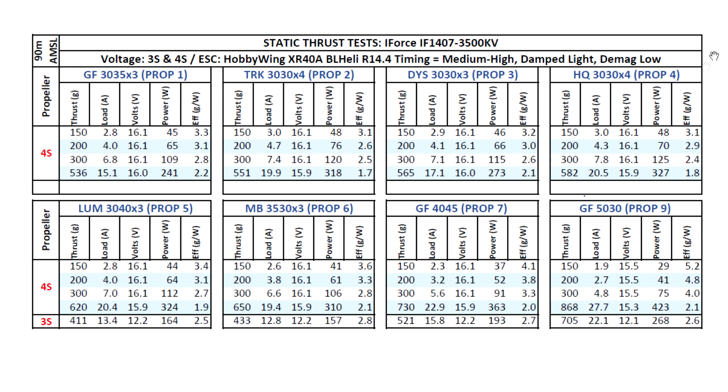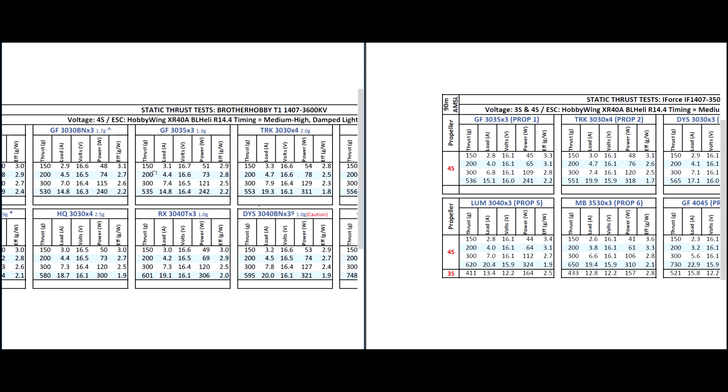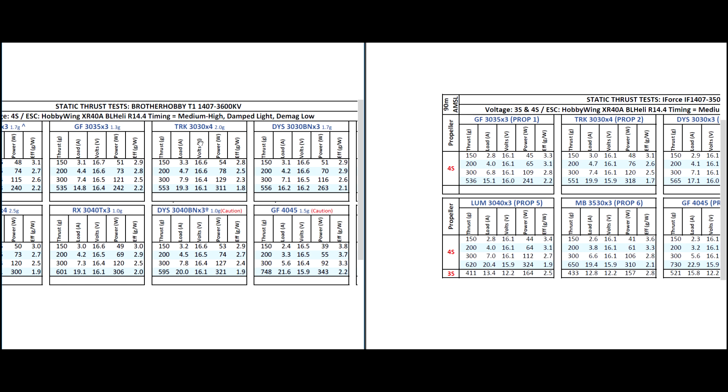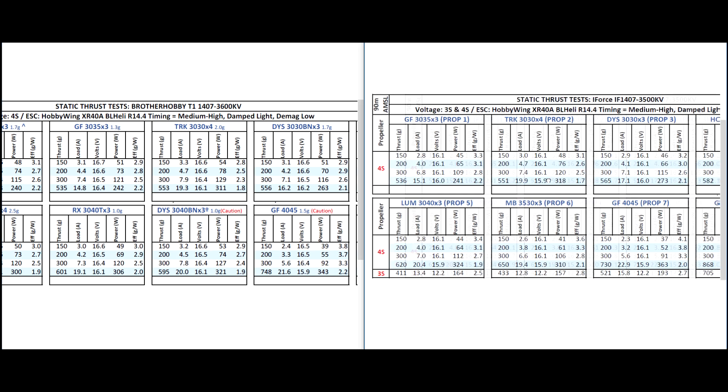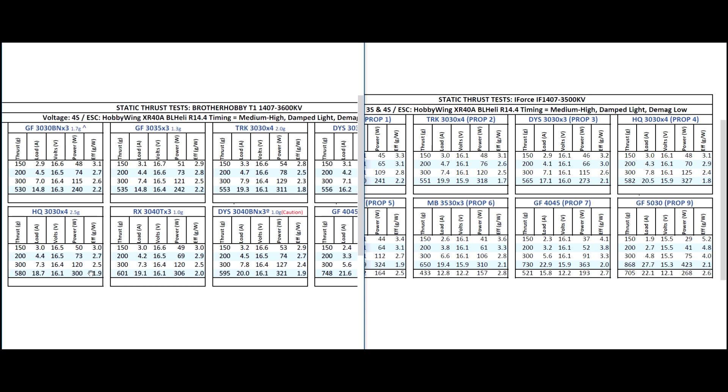Alright, so let's compare it to the Brother Hobby. So let's look at a couple of the props that would make a good comparison. Team Racecraft 3030x4, pretty close, 551 versus 553, 19.9 versus 19.3, so this one's using slightly more amps. And we're starting to see a trend, this motor's using a bit more, slightly more amps.